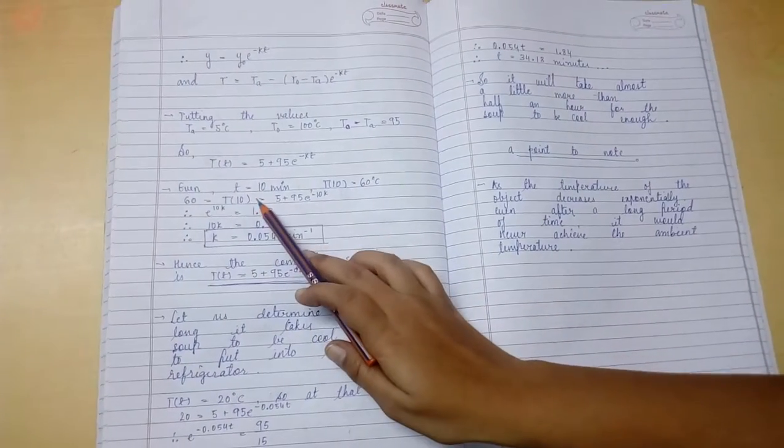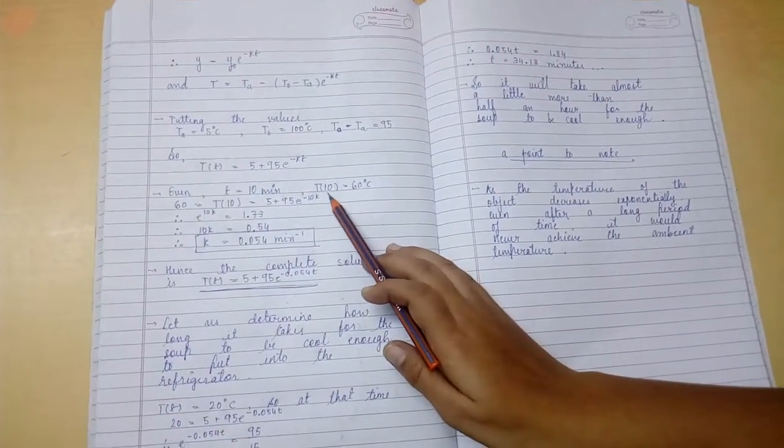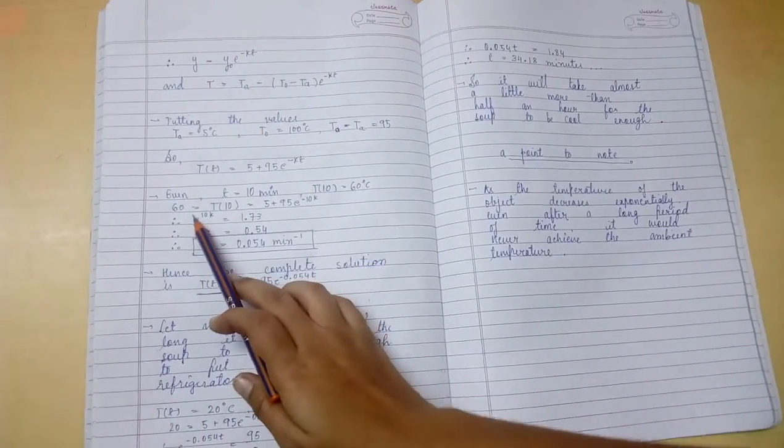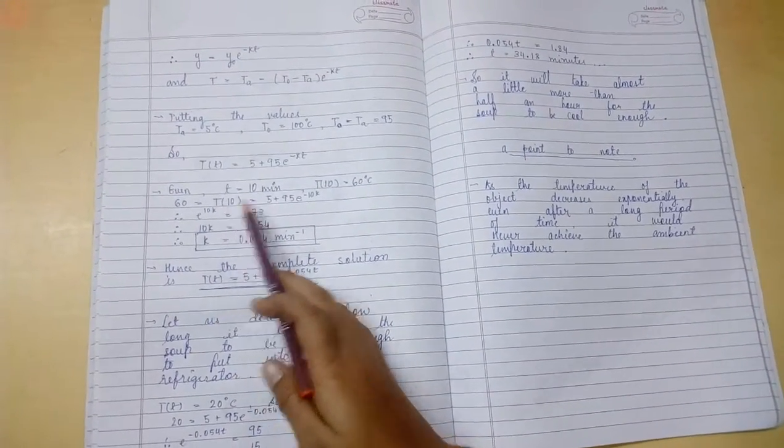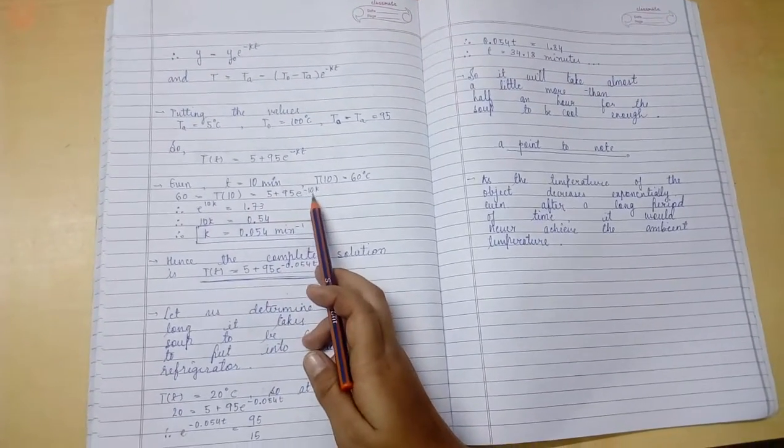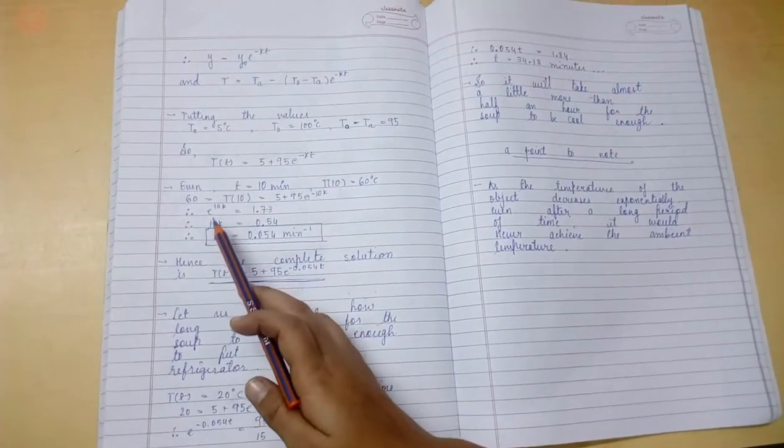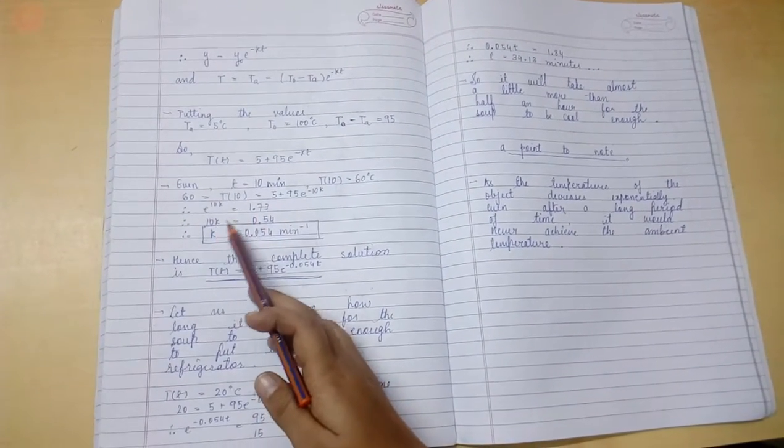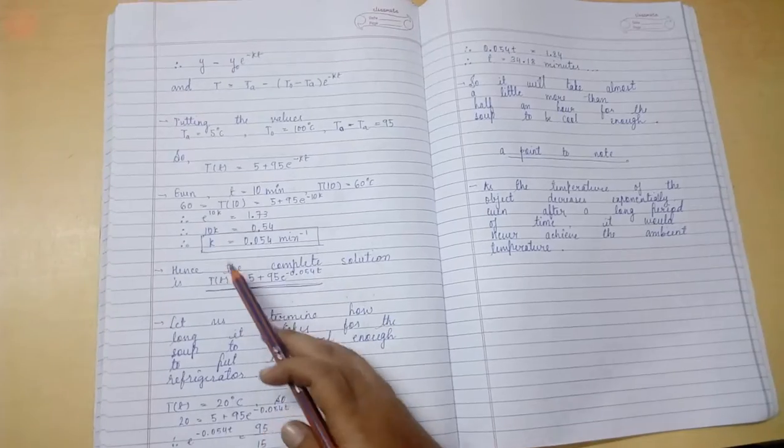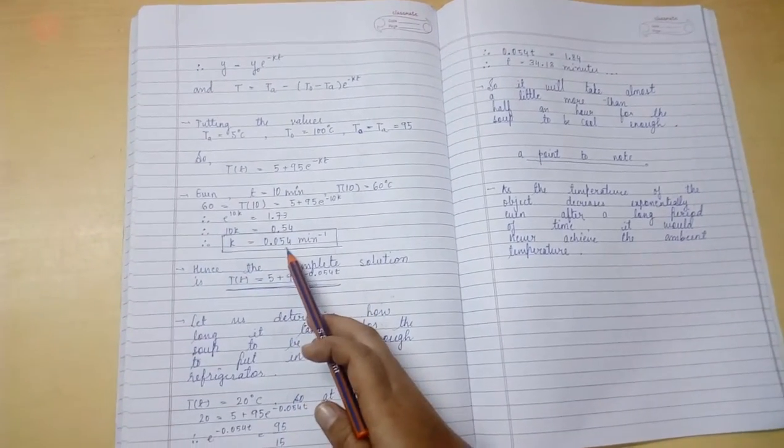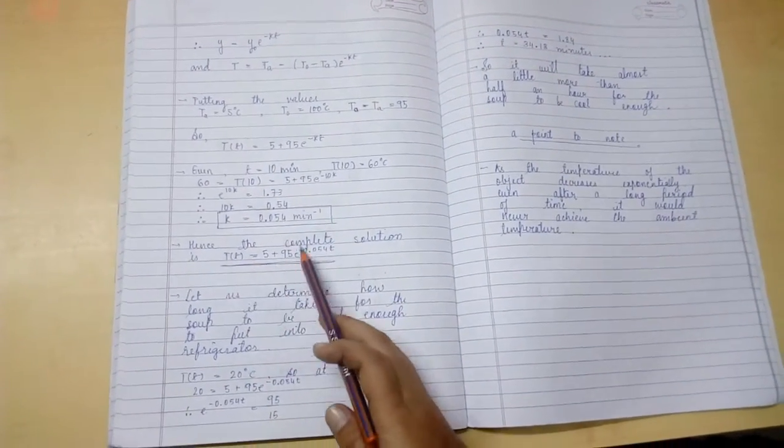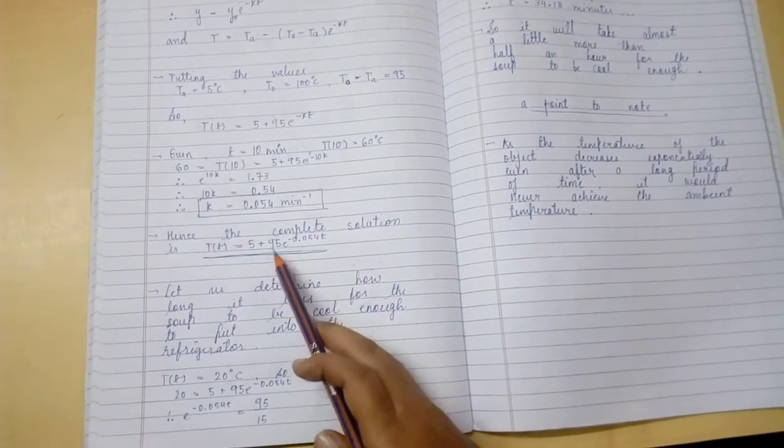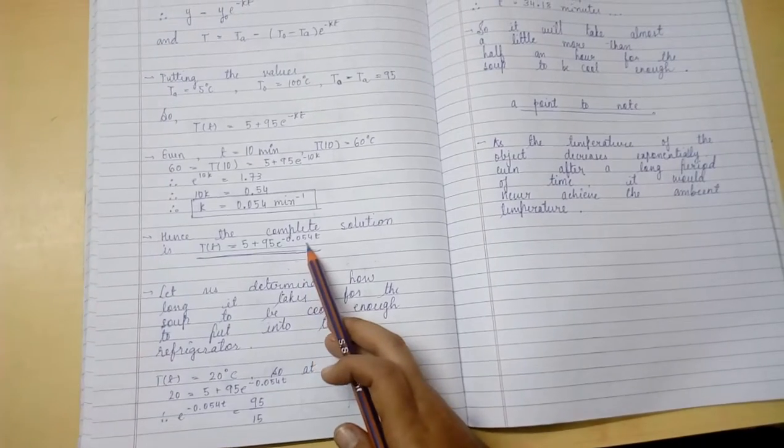Given, we know that t is equal to 10 minutes, T(10) is equal to 60 degrees centigrade. So, 60 is equal to 5 plus 95 e raised to minus 10K. Therefore, e raised to 10K is equal to 1.73. 10K is 0.54, so we get K is equal to 0.054 minute inverse. Hence, the complete solution is T(t) is equal to 5 plus 95 e raised to minus 0.054 t.